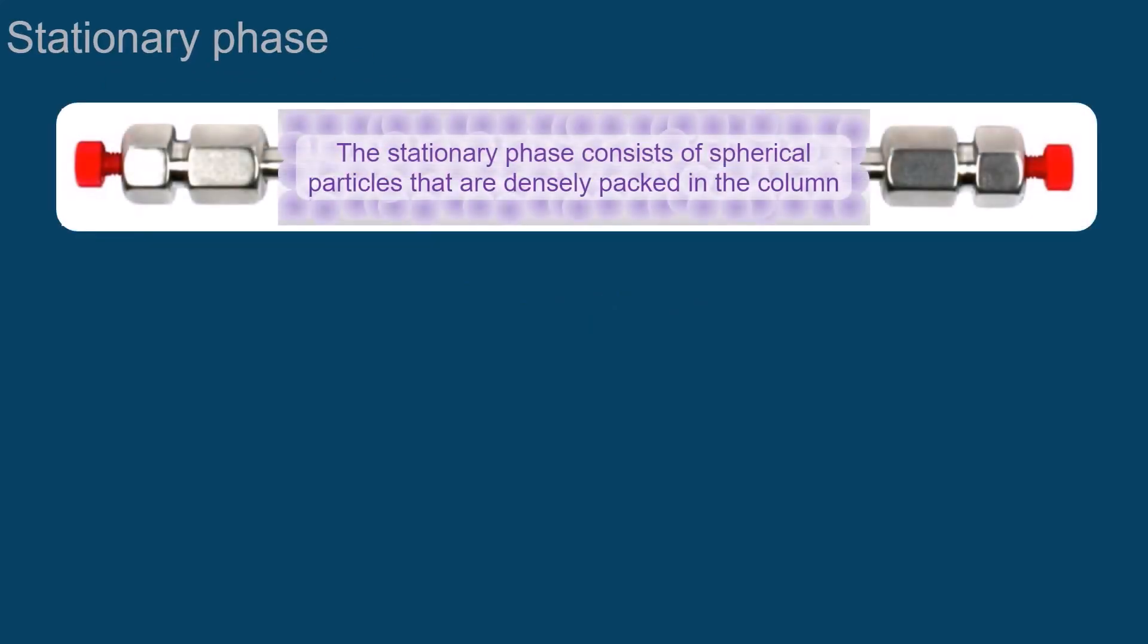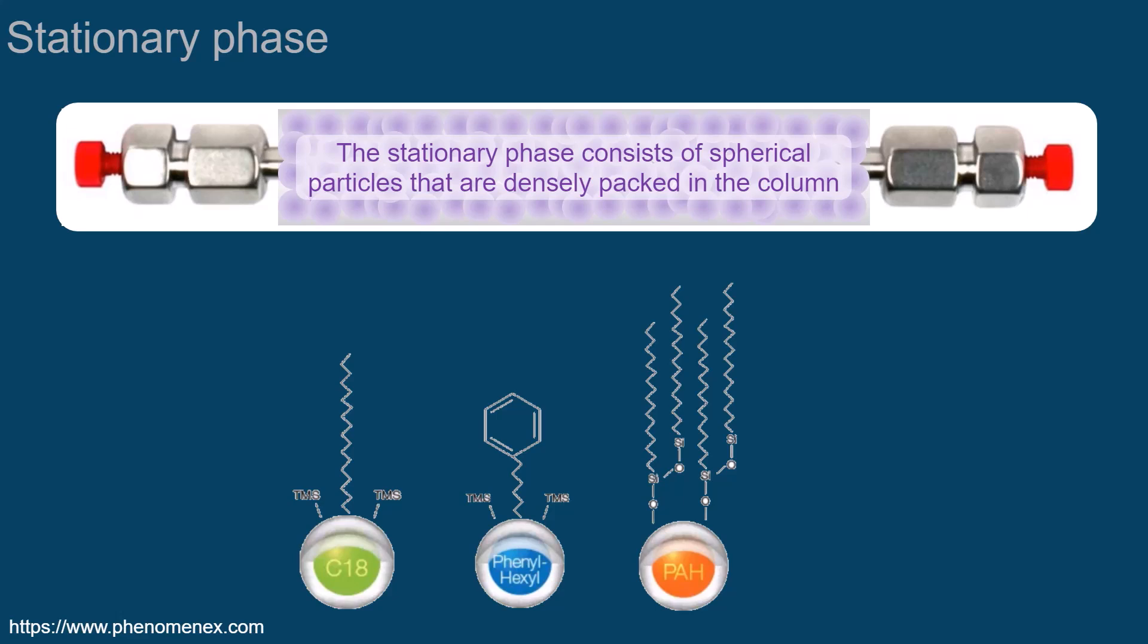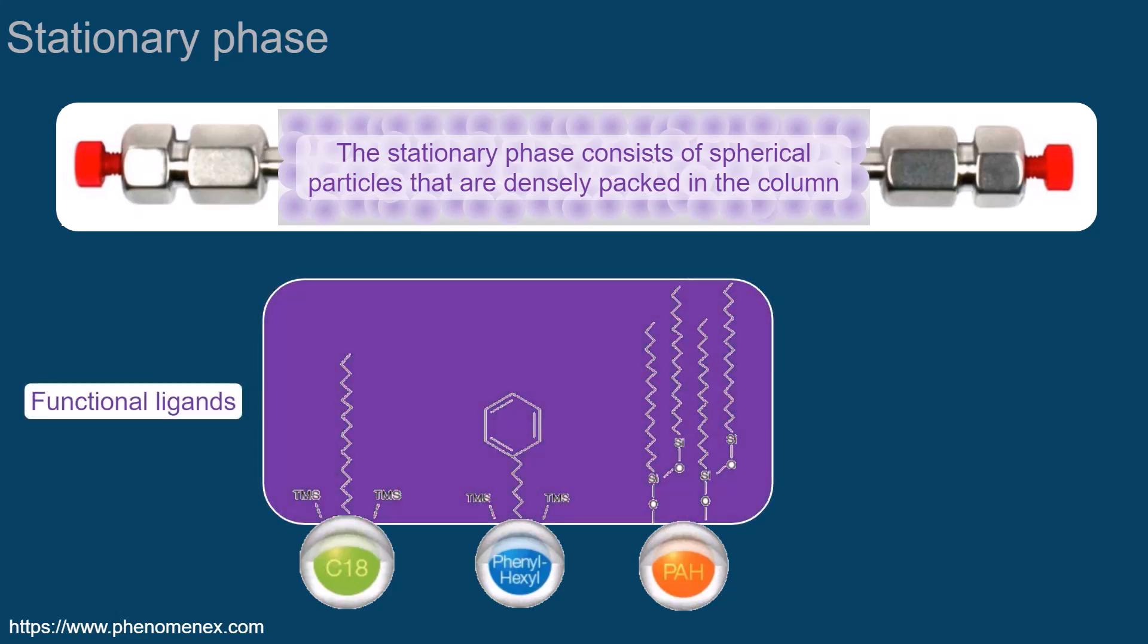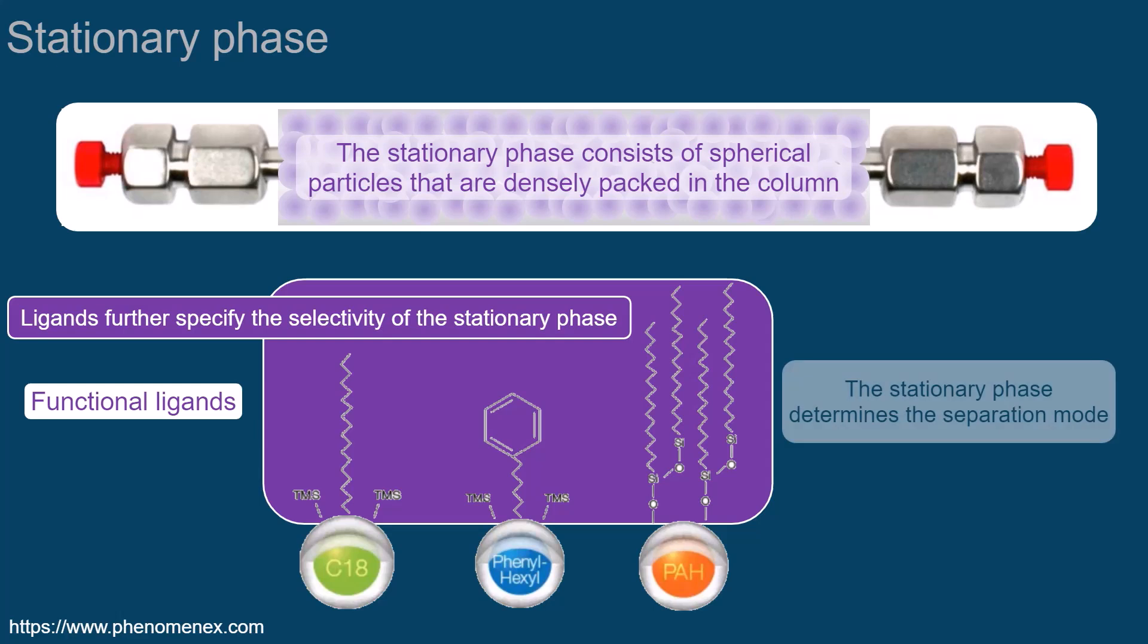The stationary phase consists of spherical particles that are densely packed in the column. The surface of the particles is typically modified with various functional ligands, with the aim to further specify the selectivity. These are just some examples of a huge variety from which you can choose. The different materials are designed in such a way that you can select between different separation modes.